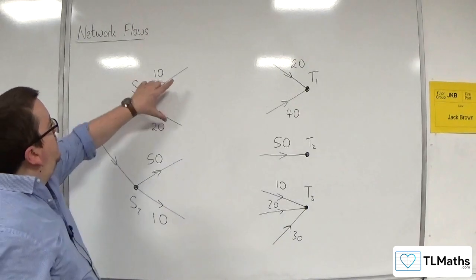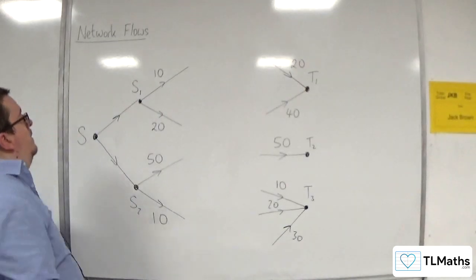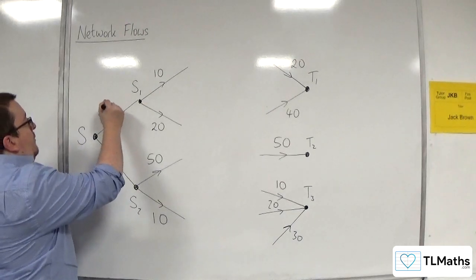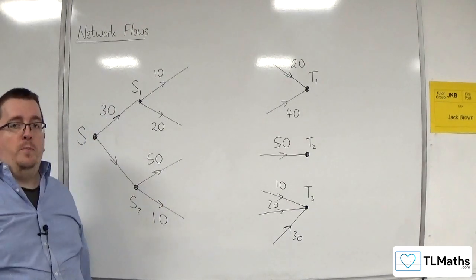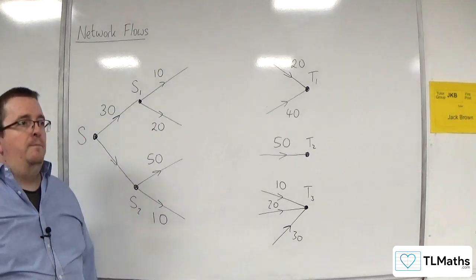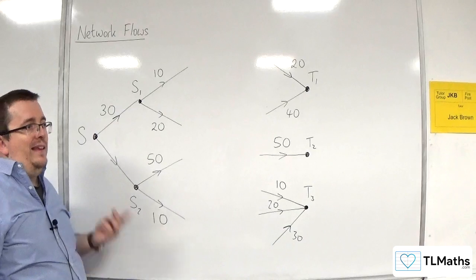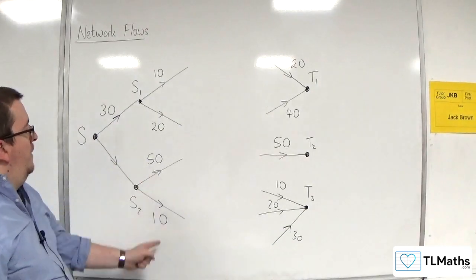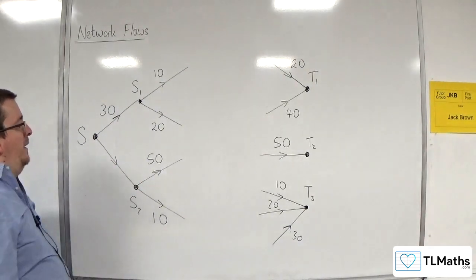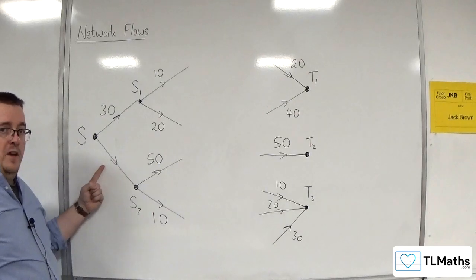So because you've got 10 and 20 going out of that, this would need to be at least 30. Now you could put 100 on that, you could put 300 on it, but it needs to be at least 30. So the best way to remember this is just to add up all of the flows coming out of your source and have that as the capacity of this arc.